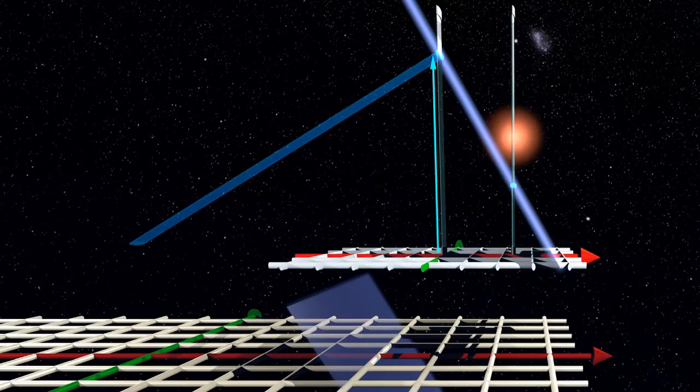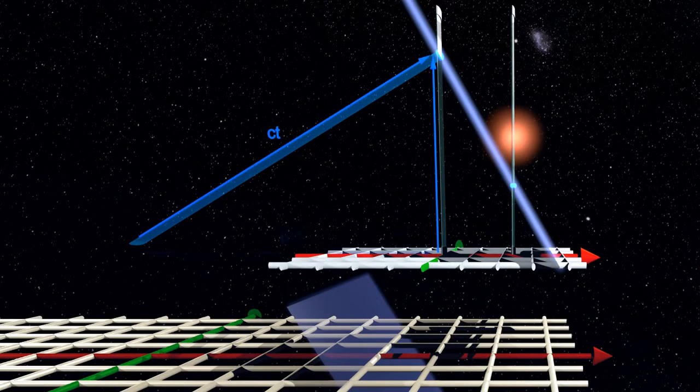The right triangle formed by the light clock, the pulse ray, and the relative frame displacement shows that this proper time is just time dilated compared to the time of the stationary frame.